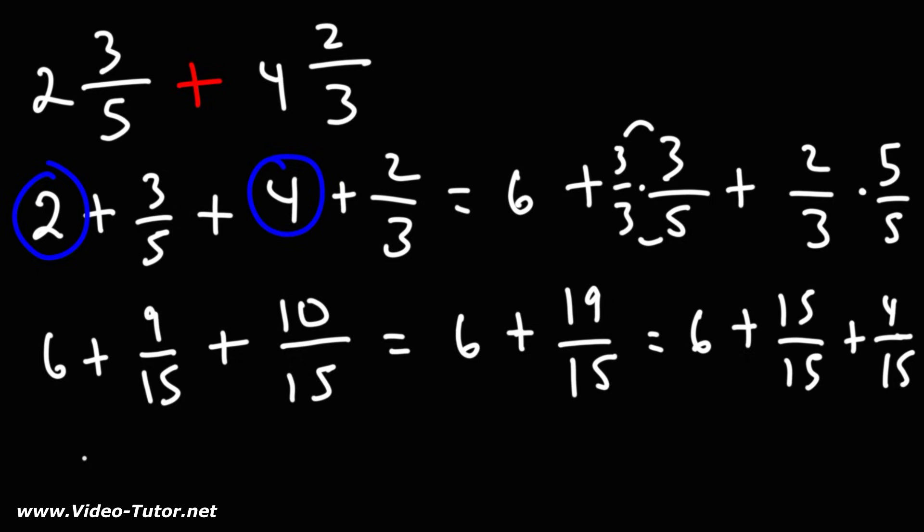15 over 15 is 1. So we have 6 plus 1 plus 4 over 15. Now 6 plus 1 is 7. So we have 7 plus 4 over 15.